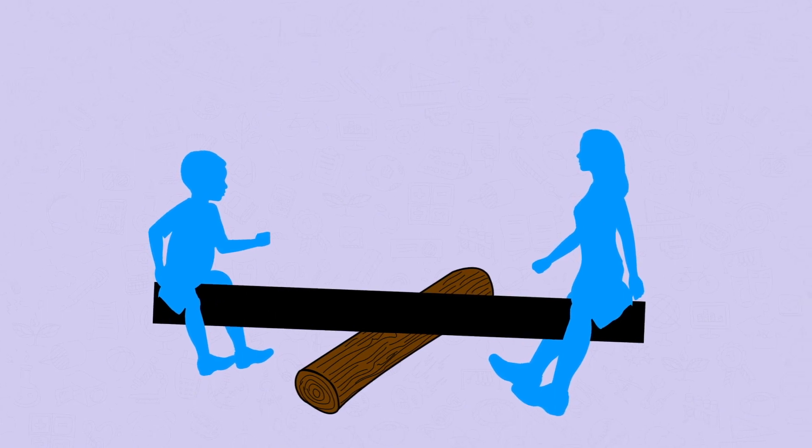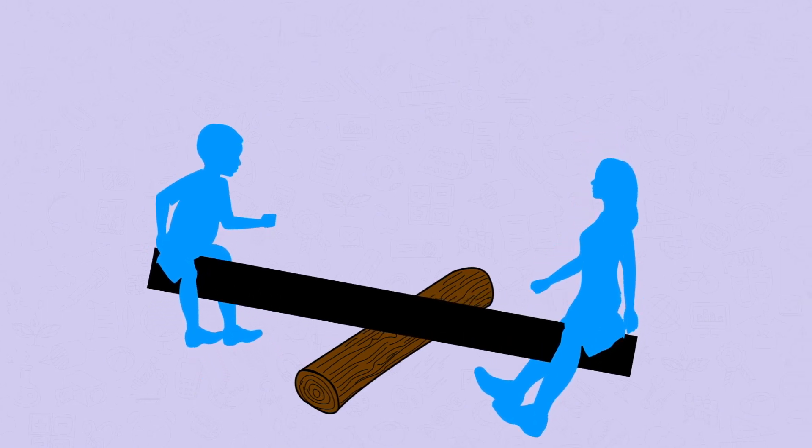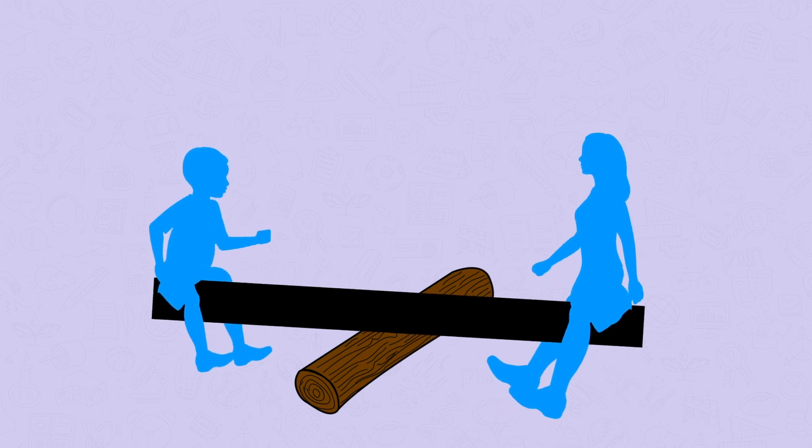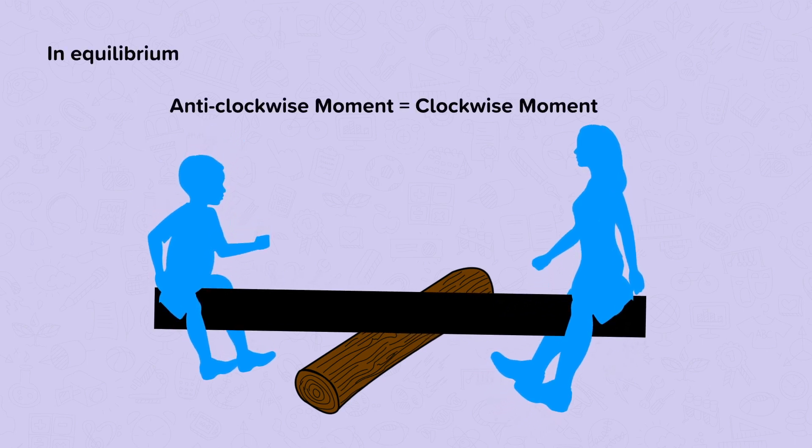Now we're going to think about a seesaw. If there is a greater turning force on one side of the seesaw, it will spin. But what happens when they aren't moving? When the seesaw is balanced? In equilibrium, or when things are balanced, the anti-clockwise moment must equal the clockwise moment.